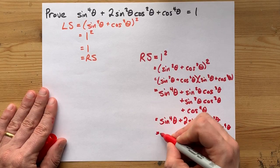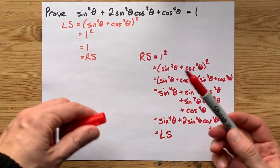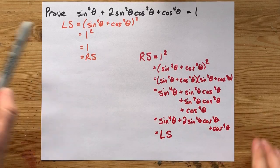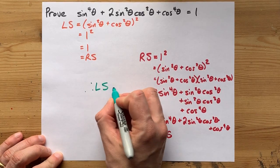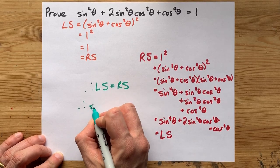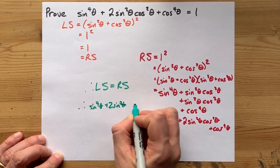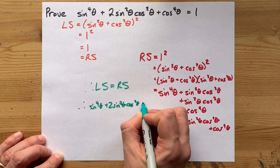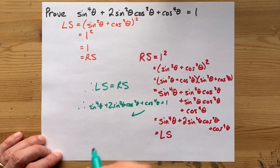Nice. That now equals the left side. Which way do you prefer? Hey, there's no right answer for that. But in both of these cases, you celebrate solving the identity by saying therefore, left side equals right side. And therefore, sin^4θ + 2sin²θcos²θ + cos^4θ = 1. Done.